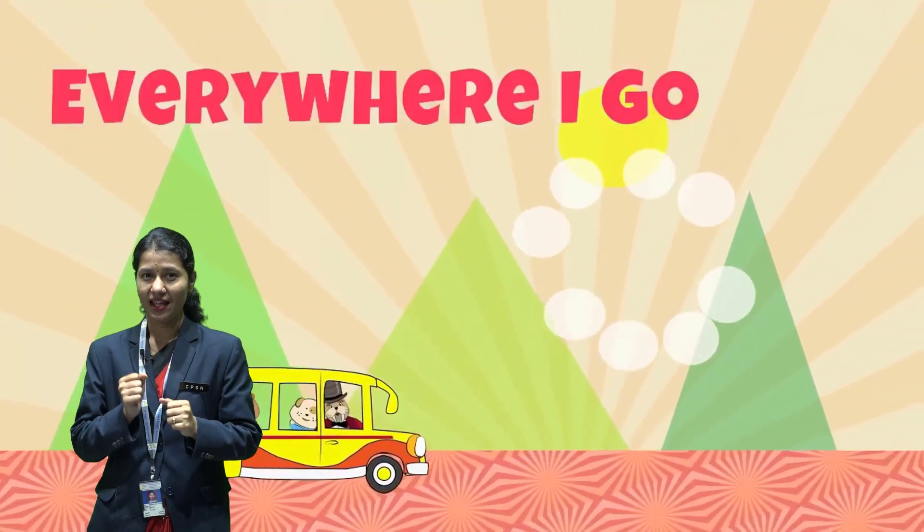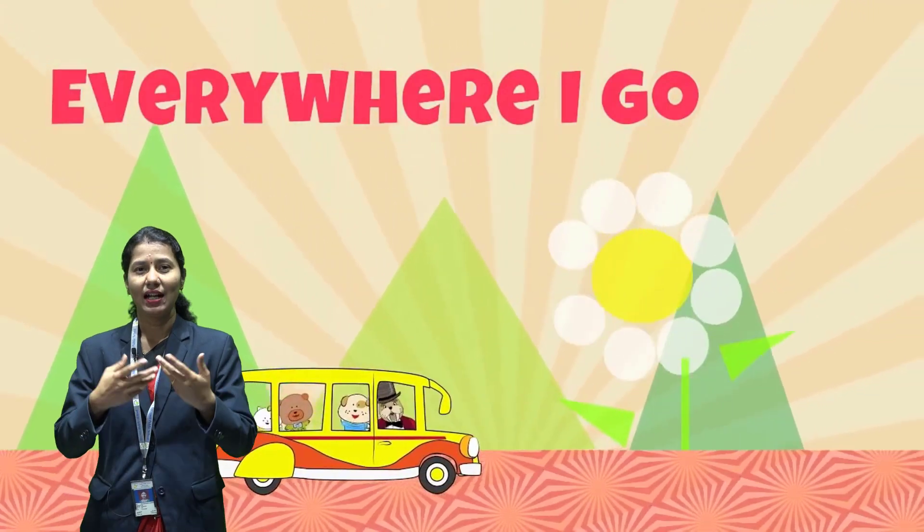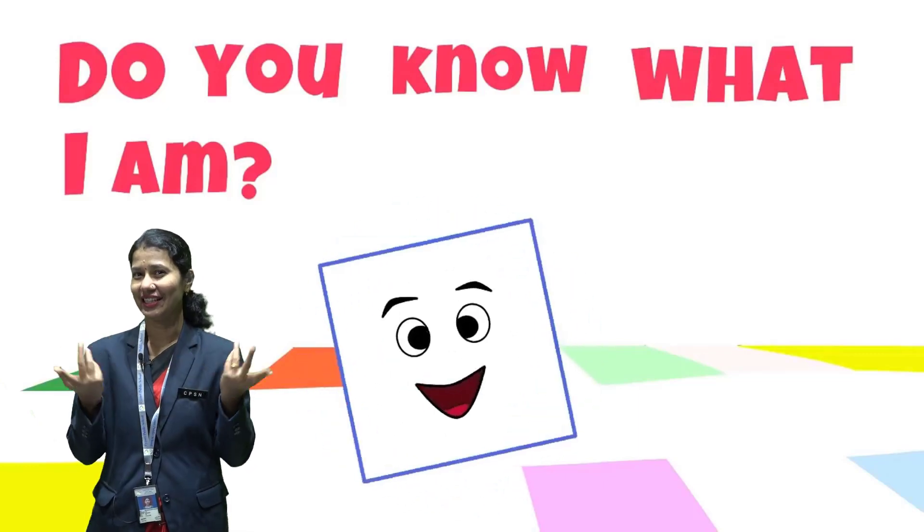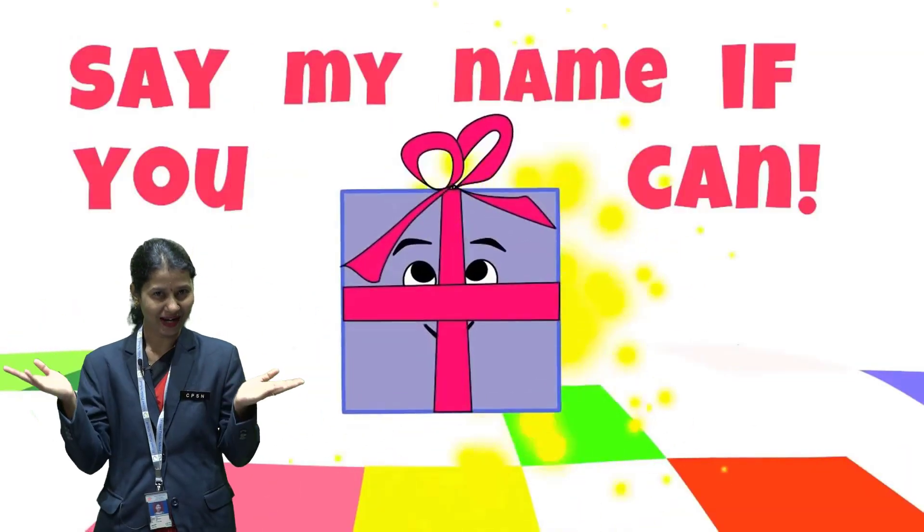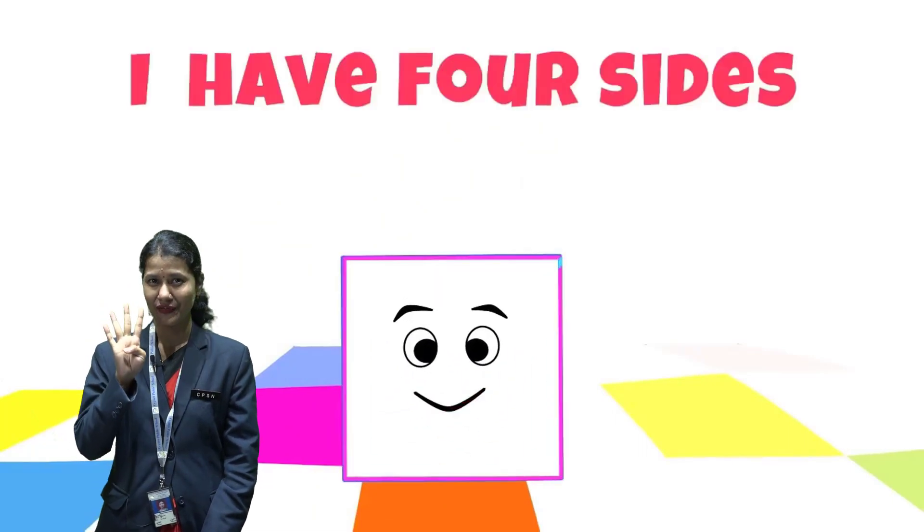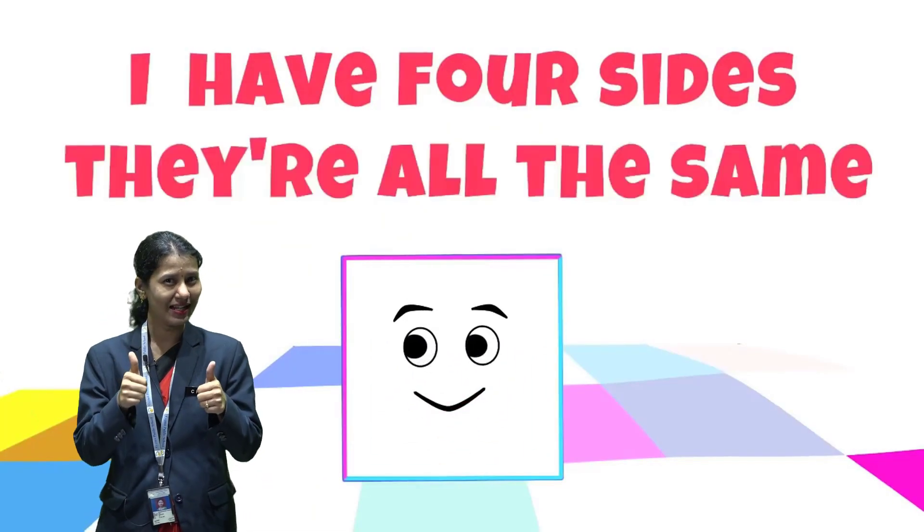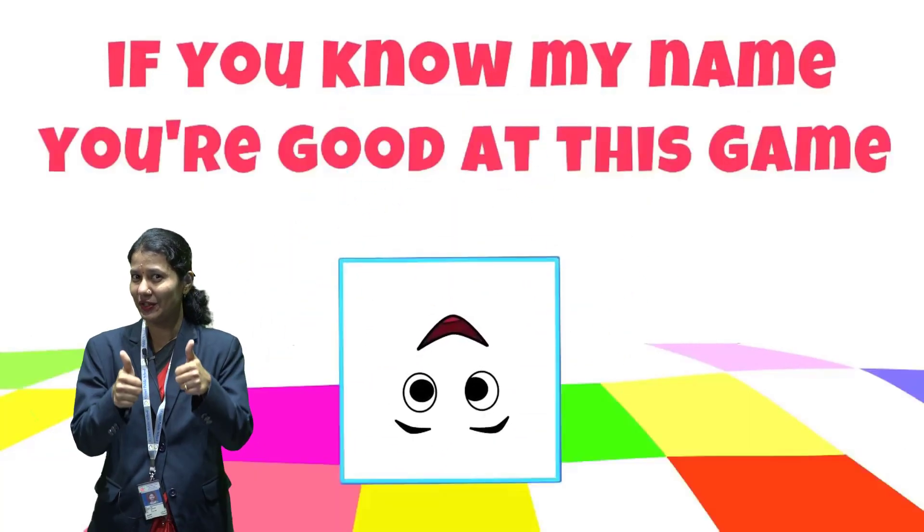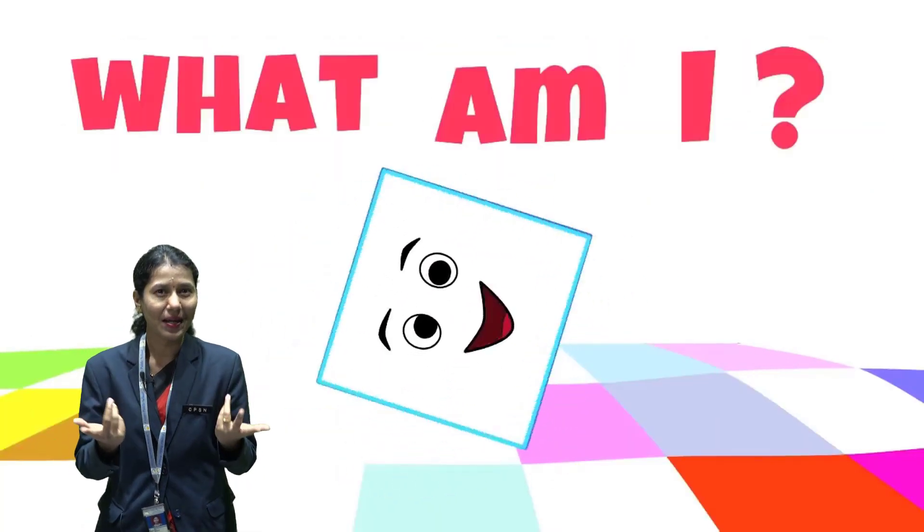Do you know what I am? Say my name if you can. I have four sides. They are all the same. If you know my name, you are good at this game. What am I? You are a square.